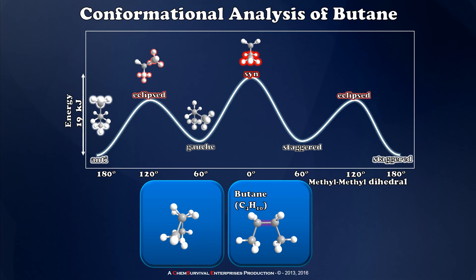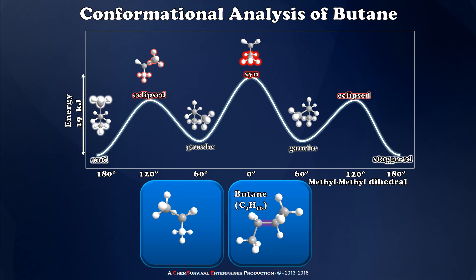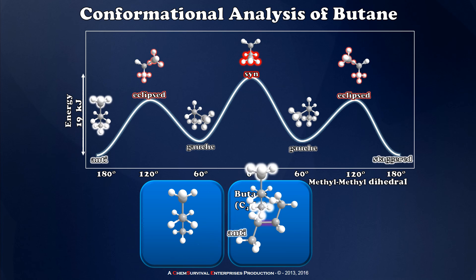Another 60 degree rotation will take me back to another gauche orientation. Yet another 60 degree rotation leads me again to an eclipsed conformer in which my largest substituents are eclipsing smaller ones. And my final 60 degree rotation will bring me back to my starting point in an anti conformation.